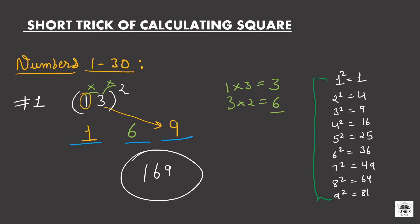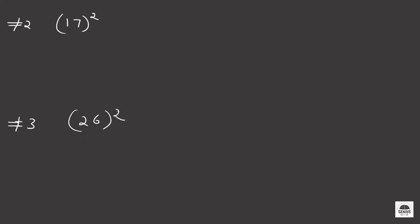Now let's take another example. Similarly, to find out the square of 17, we mark 3 blanks here. For the first blank, we just write down the square of the first digit of this number, which is 1. So the square of 1 is equal to 1. Now for the last blank, we will square the 7, so 7 squared is equal to 49.